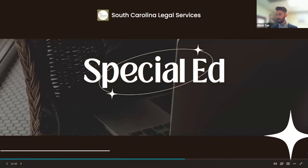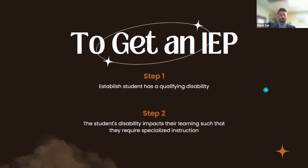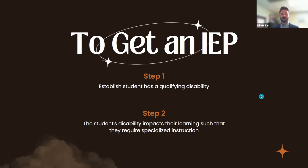Special education. When we're talking about IEPs — individualized education plans — I'll refer you to our YouTube channel where I've done a four-part series going through an actual IEP document line by line. To get an IEP, step one: you establish the student has a qualifying disability. A diagnosis from your pediatrician is typically sufficient, but the DSM doesn't always overlap specifically with qualifications under special ed. So it's not always a slam dunk.